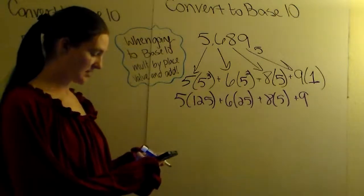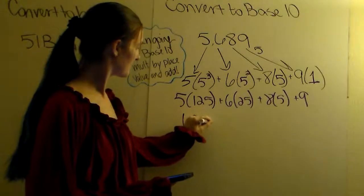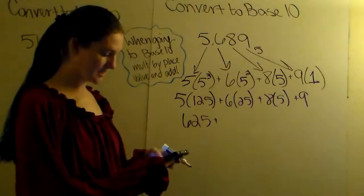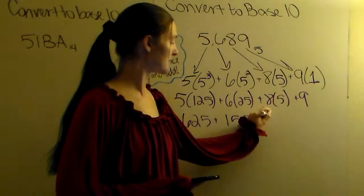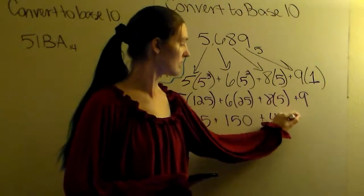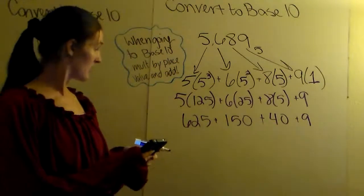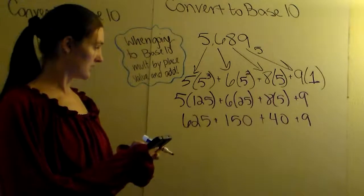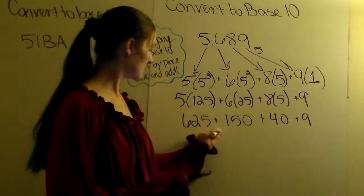So we've got 5 times 125, that's 625. Plus 6 times 25, 150. 8 times 5 is 40, plus 9. And then add them together. 625 plus 150 plus 40 plus 9. So 824.